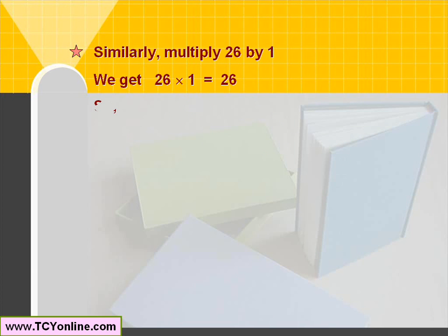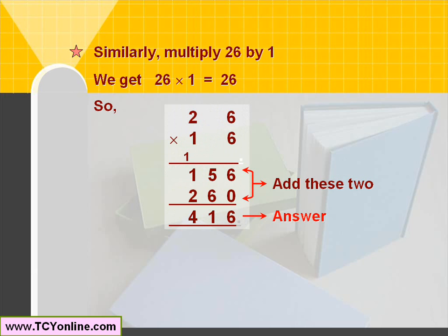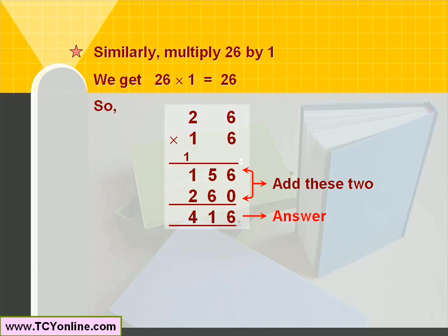Similarly, multiply 26 by 1 to get 26. Write this as 260 and place it below 156. Finally, add these two numbers: 156 plus 260 gives 416. So 26 times 16 is simply 416.